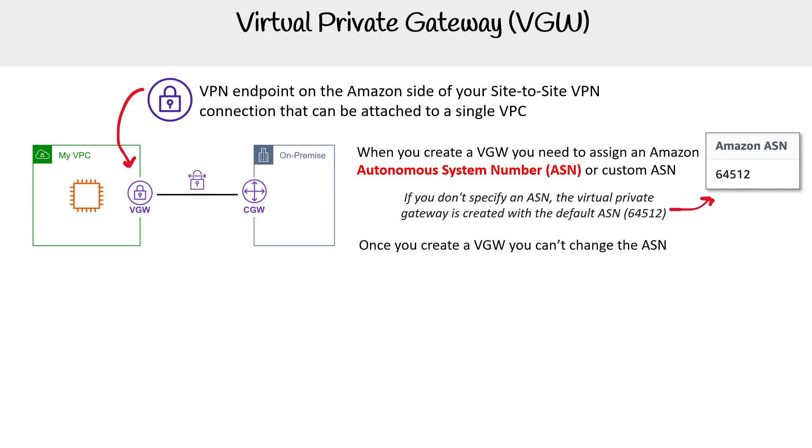Once you create your VGW, you cannot change the ASN. So you're going to be locked in with whatever it is.